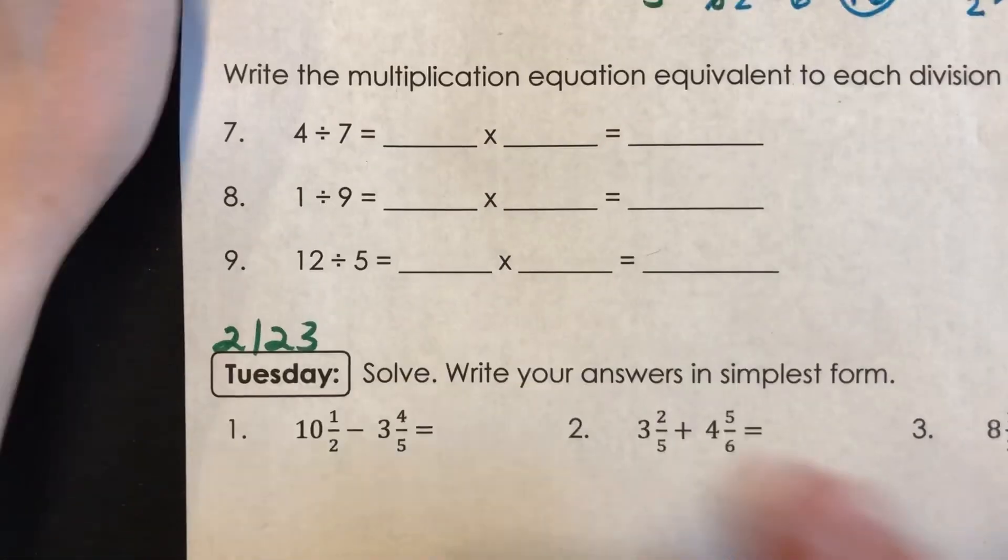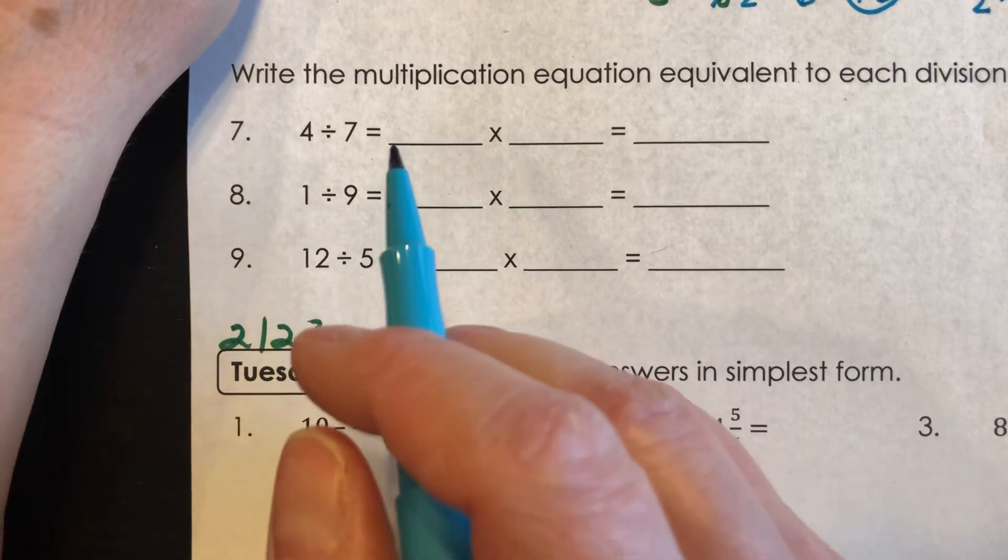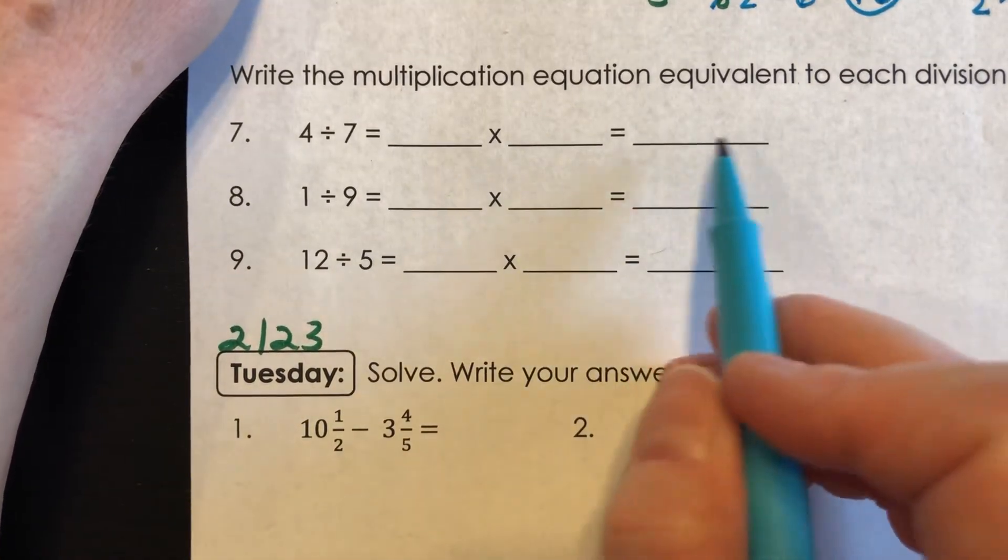Okay. So now we're at seven, eight, and nine. I ask you to write the multiplication equation equivalent to each division equation, and then we're going to solve it out.